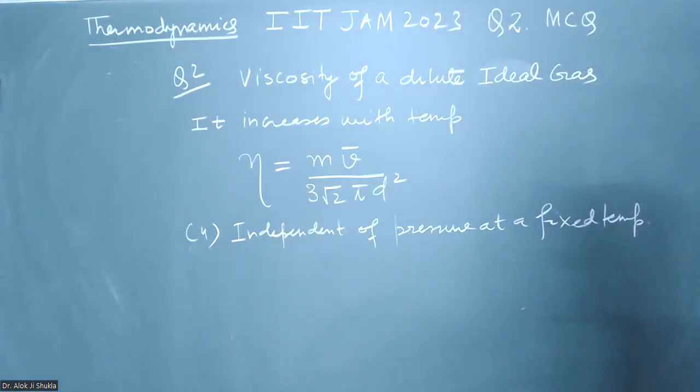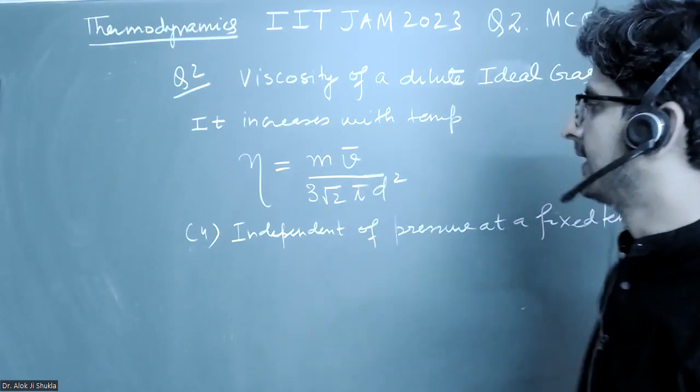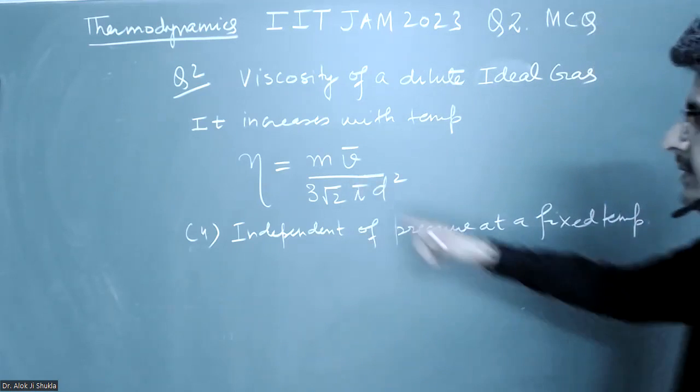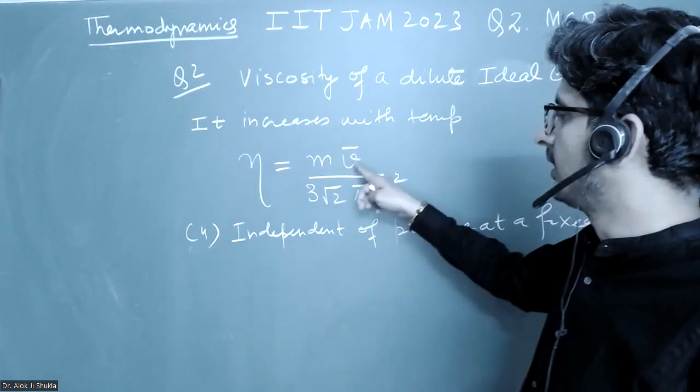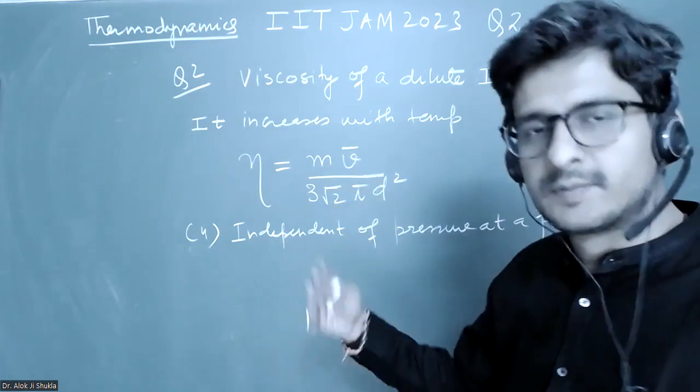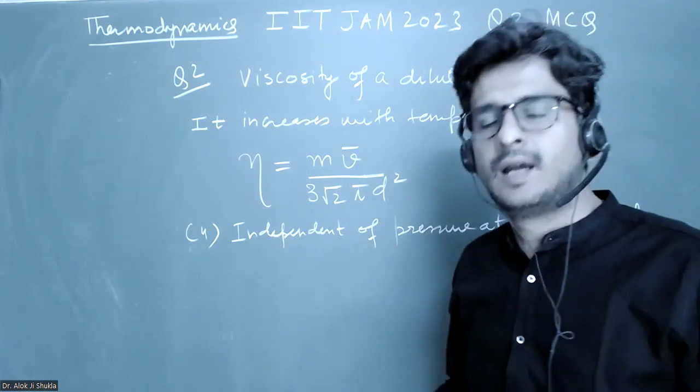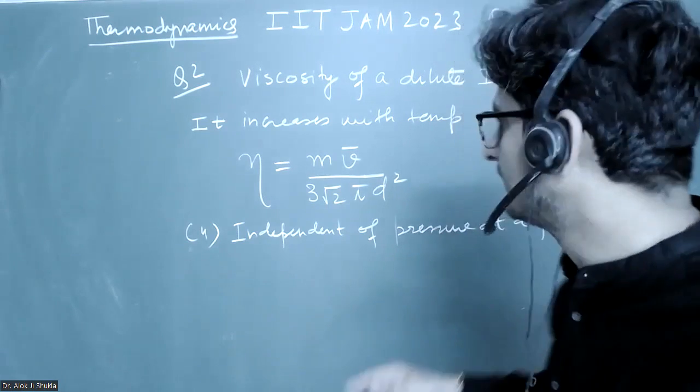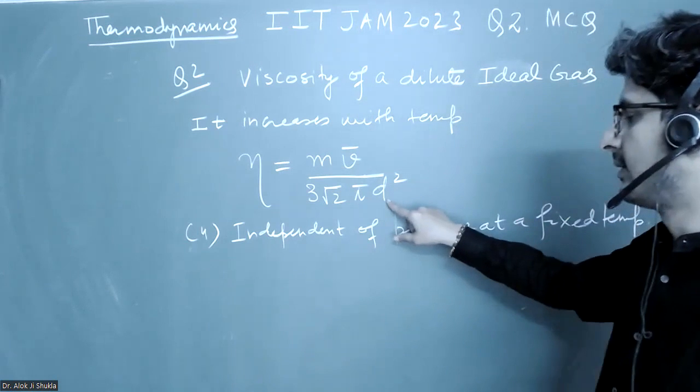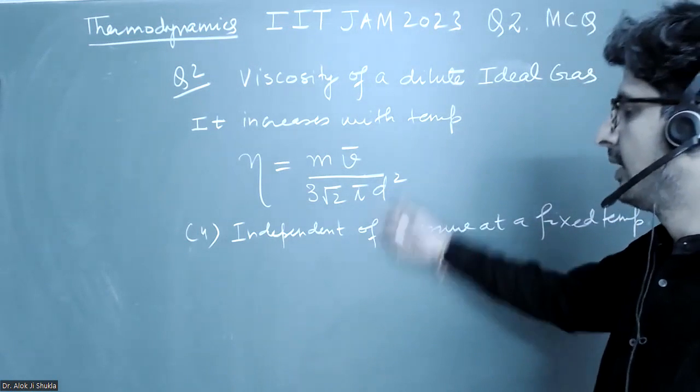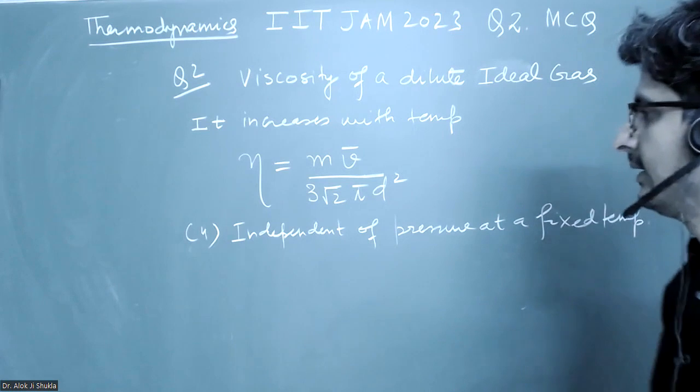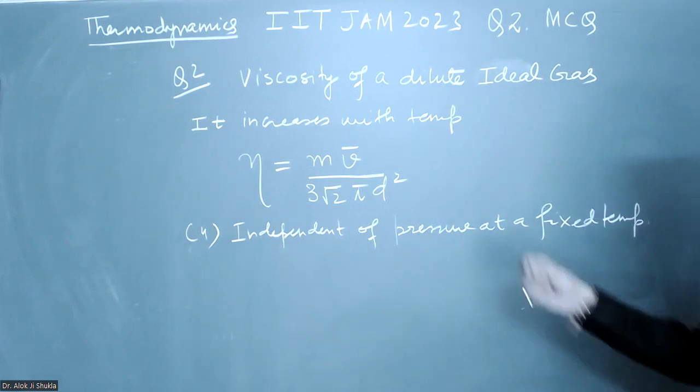The coefficient of viscosity is given by this expression, where m is the mass of the gas molecule, and this is the average velocity which is proportional to the square root of temperature T according to the kinetic theory of gases, and this is the diameter of the molecule.